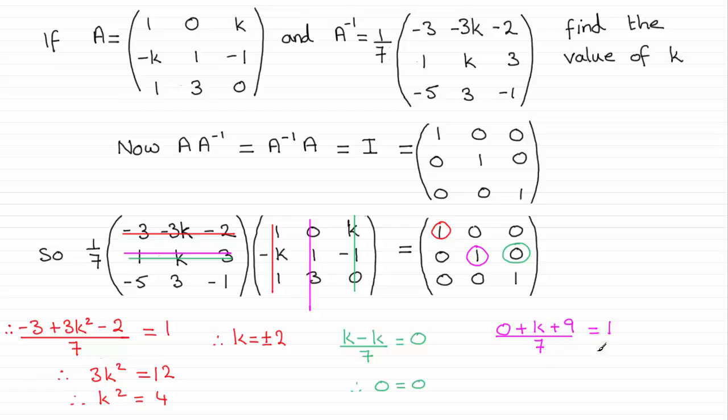And by multiplying both sides by 7, subtracting 9, I can see that we end up with k equaling minus 2.